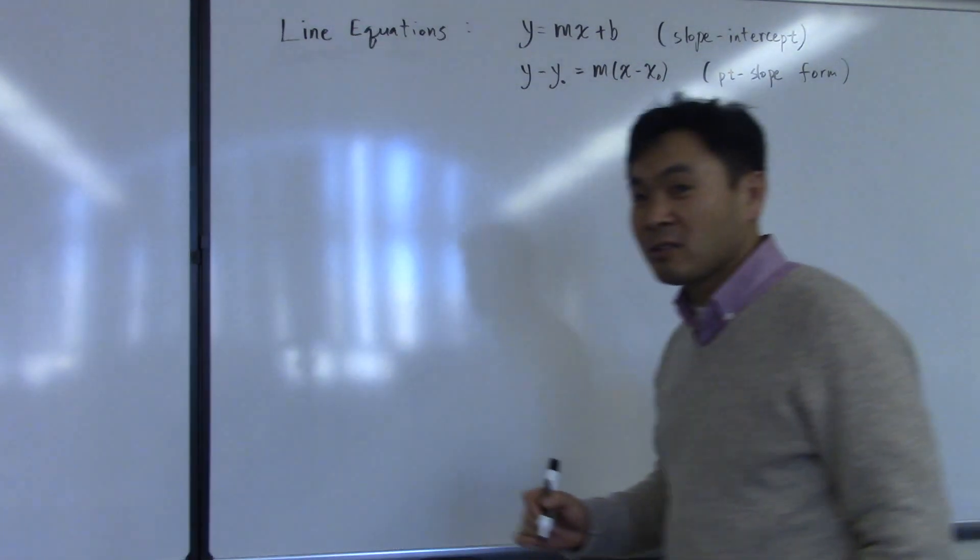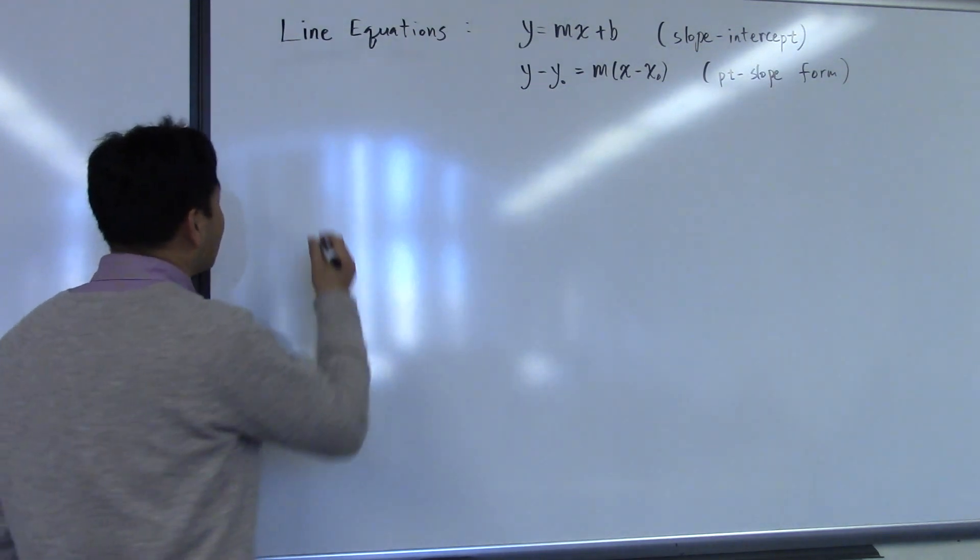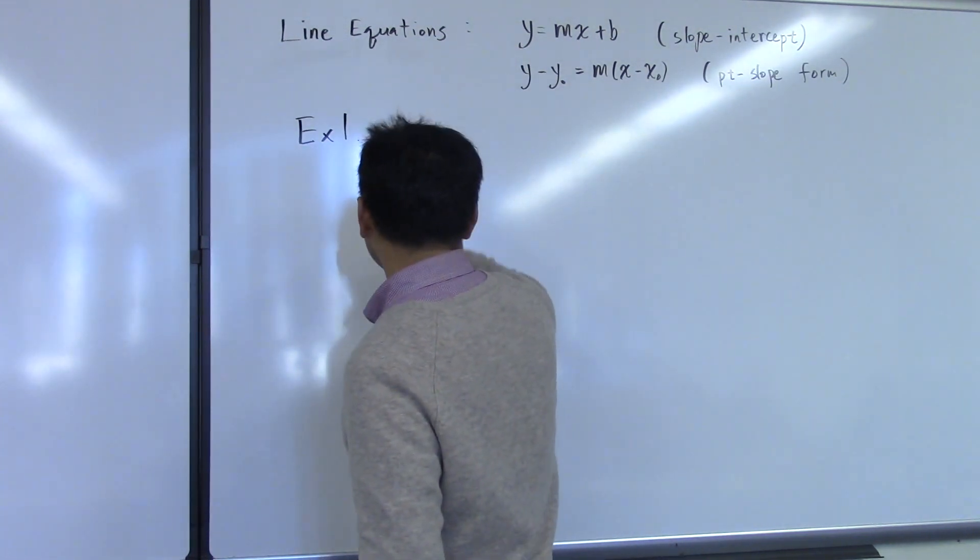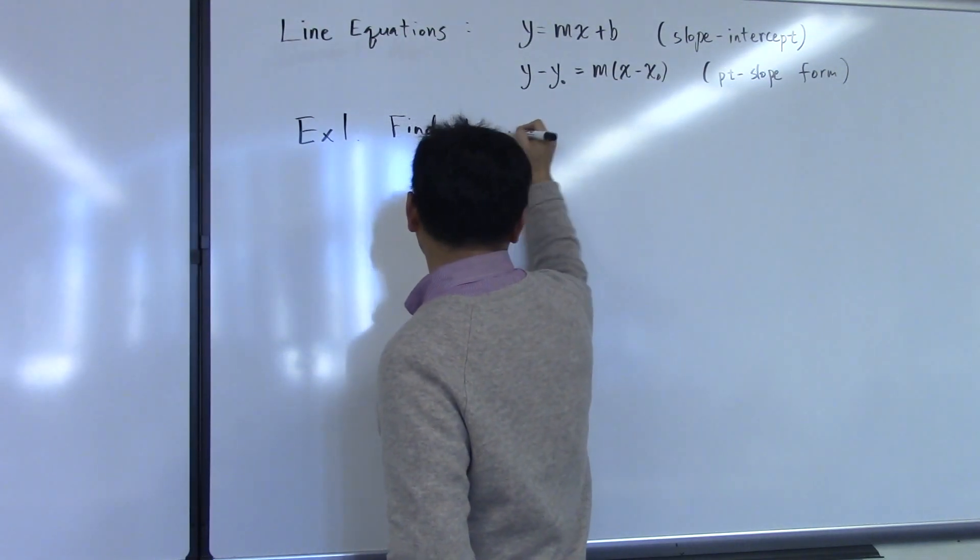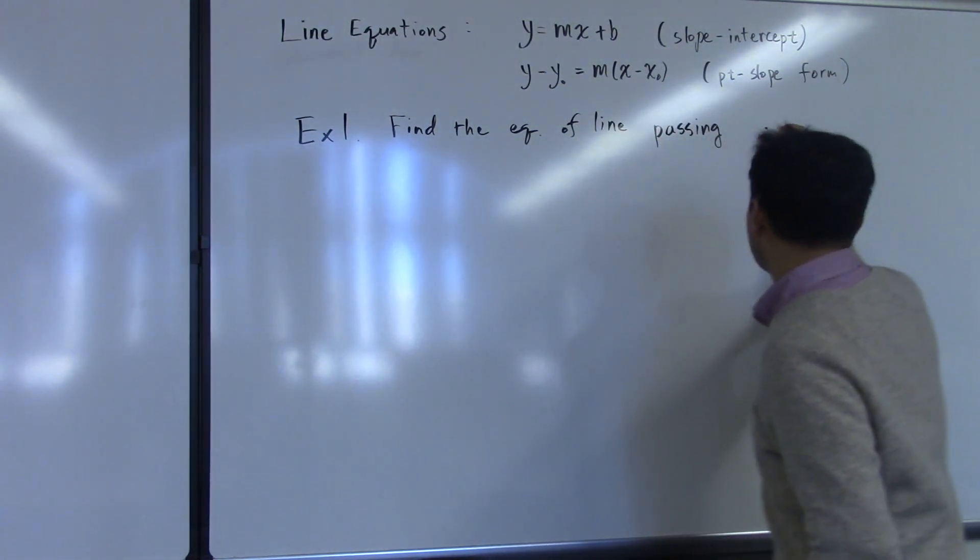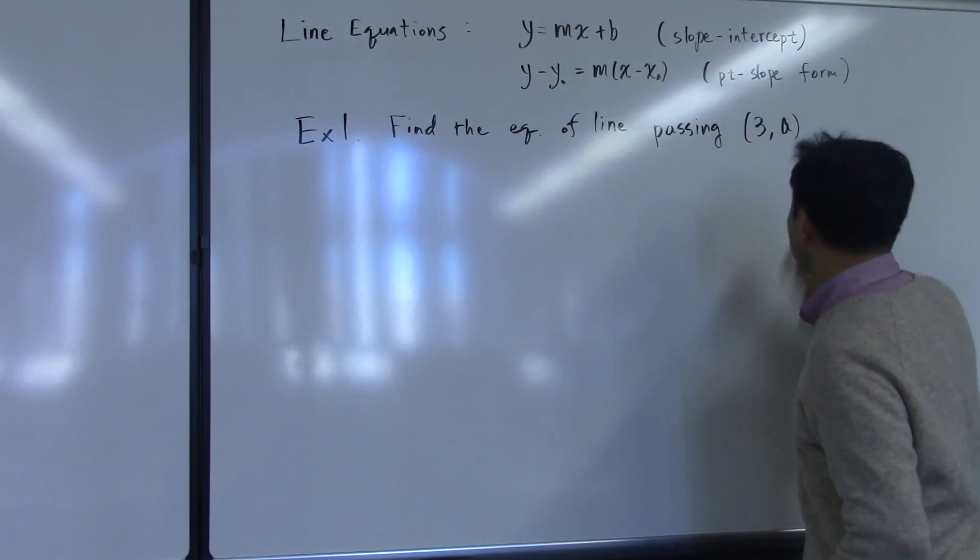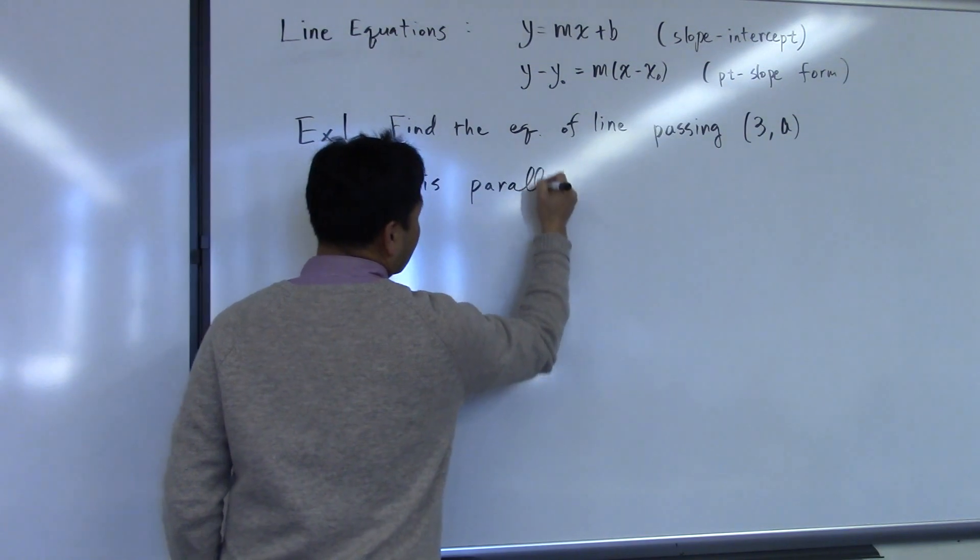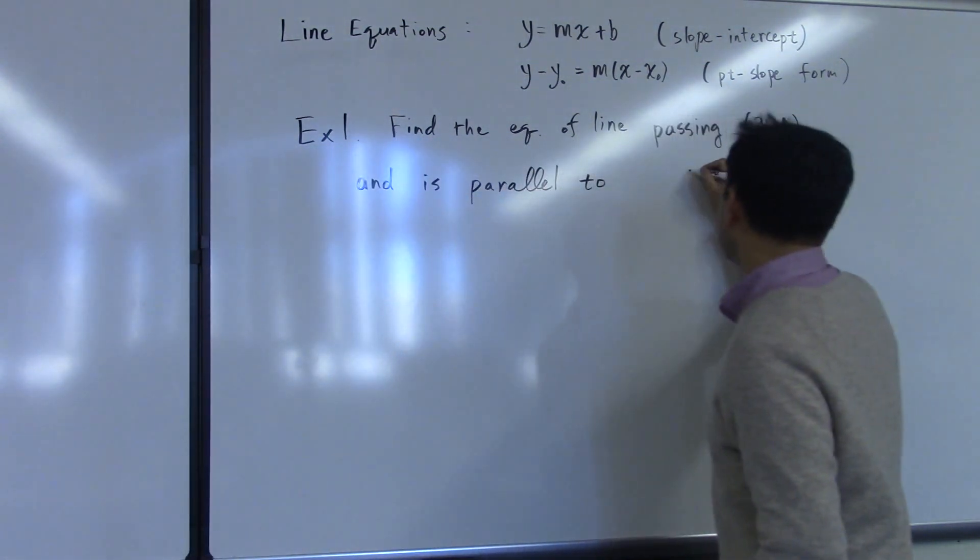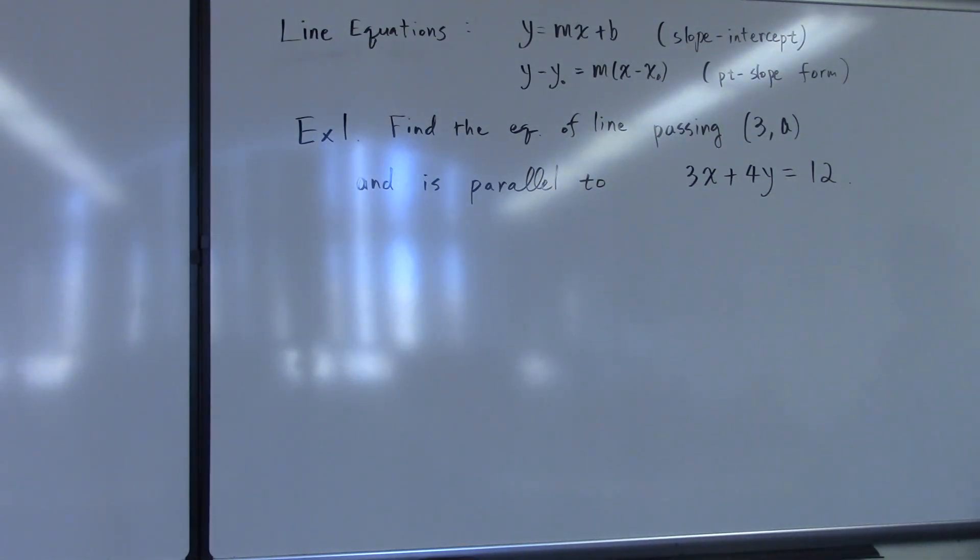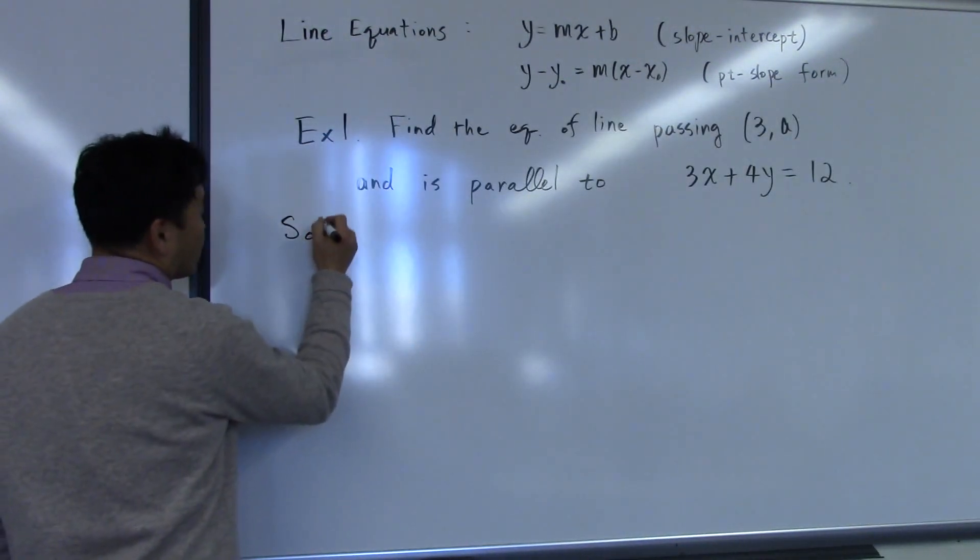Since this is not the first time you've seen how to find the equation of the line, let me directly jump to an example question. Find the equation of the line passing through 3 comma a and is parallel to 3x plus 4y equals 12.